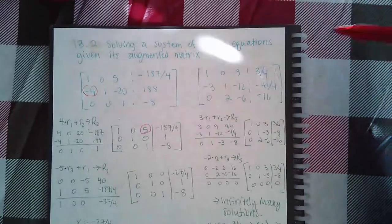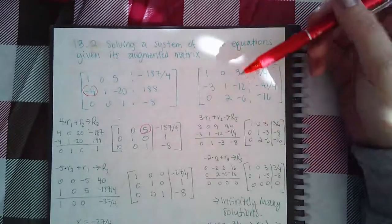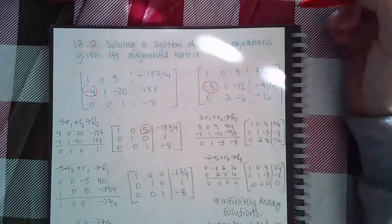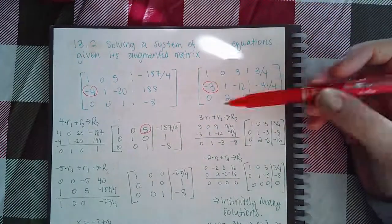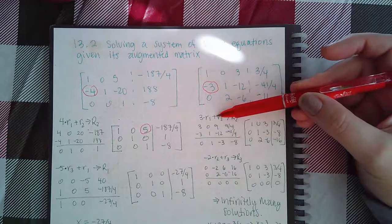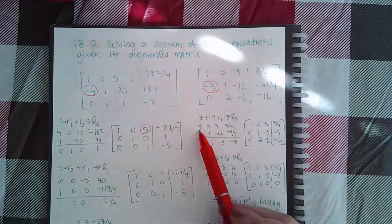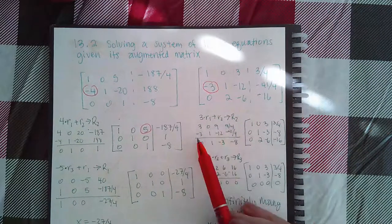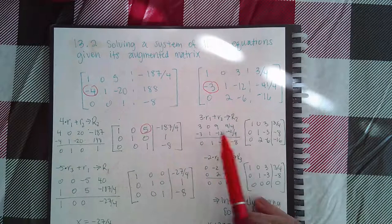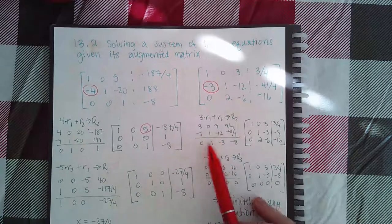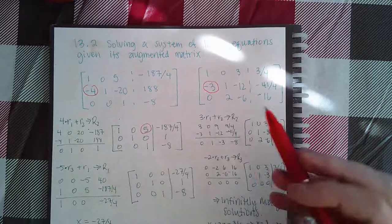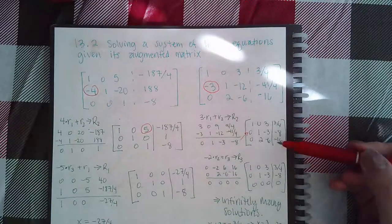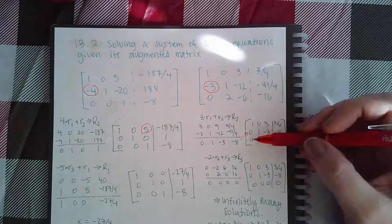For this other matrix we're going to do the same thing. We already have the one where we need it; we need to turn this entry into a zero. So we're going to do three times row one plus row two. This is all of row one's items times three, with row two items underneath. When I combine them I get this, which becomes my new row two. Row one and row three stay exactly the same.